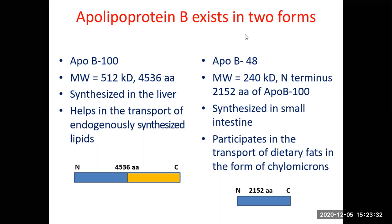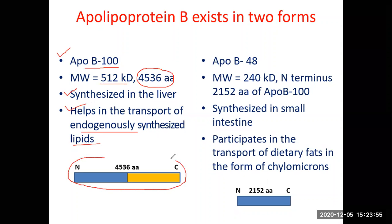Apolipoproteins exist in two forms. There is ApoB100, with a molecular mass of 512 kilodaltons, consisting of a single polypeptide of 4536 amino acids. It is synthesized in the liver and helps in the transport of endogenously synthesized lipids. ApoB48 is another version; its molecular mass is 240 kilodaltons and it is made up of only the first 2152 amino acids of ApoB100, starting from the N-terminus.